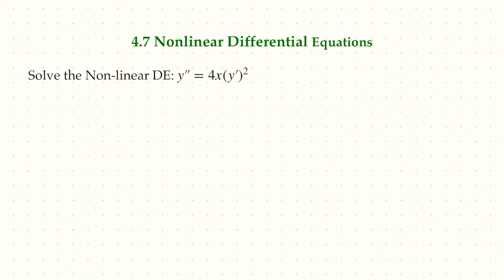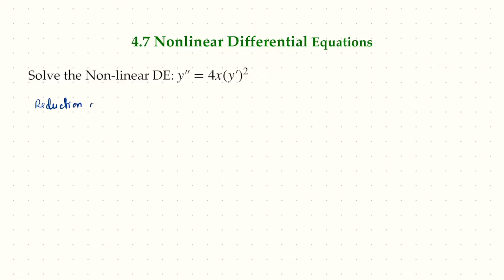Here's an example of a nonlinear differential equation. If you pay close attention, there's not really a single method, but notice that I have y double prime and y prime, and the y itself is missing. Therefore, we can do a substitution to reduce from second order to first order, and hopefully use methods we've used before. This is basically reduction of order by substitution.